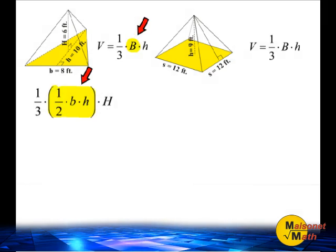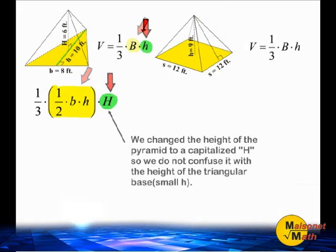We are going to substitute the formula to find the area of a triangle with the capital B in our formula. Notice that we changed the height of the pyramid to a capitalized H so we don't confuse it with the height of the triangular base, which is represented with a small h.